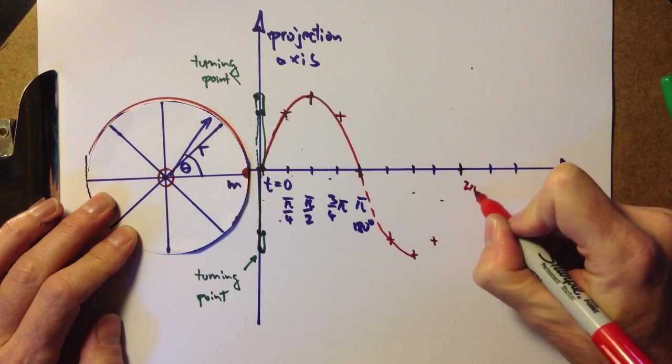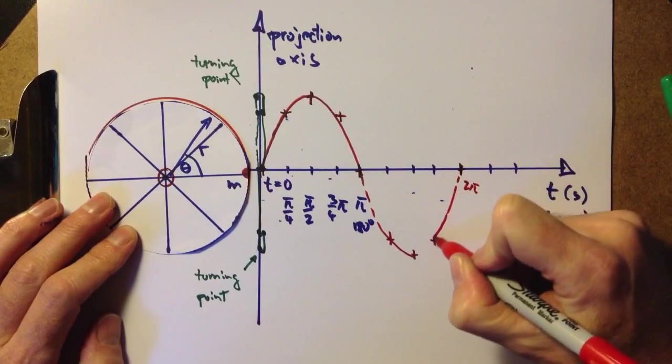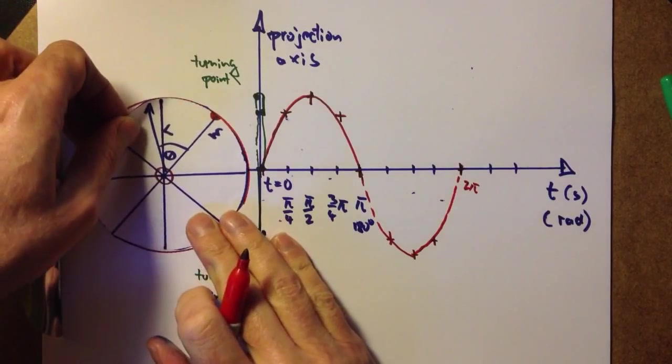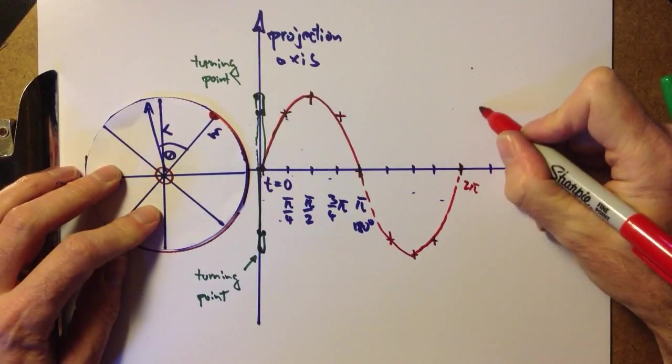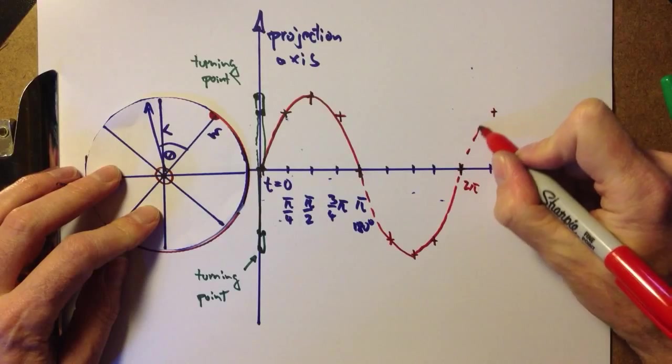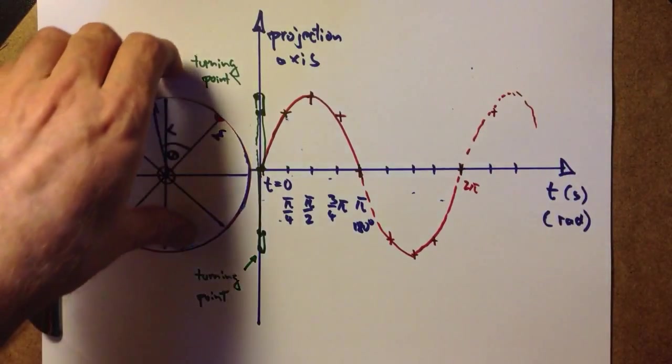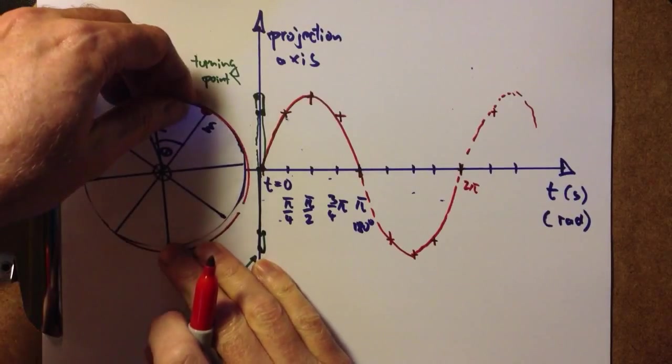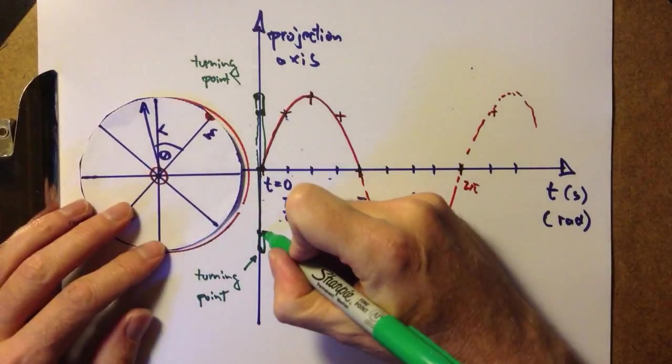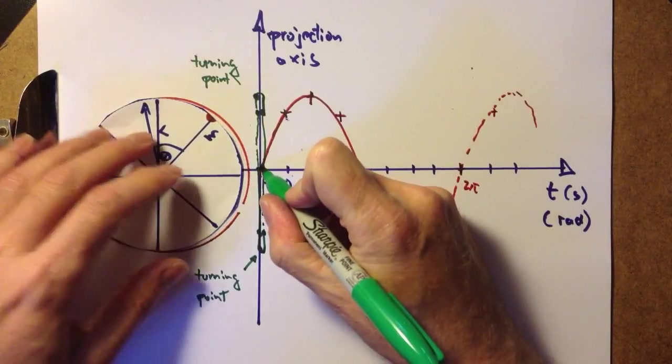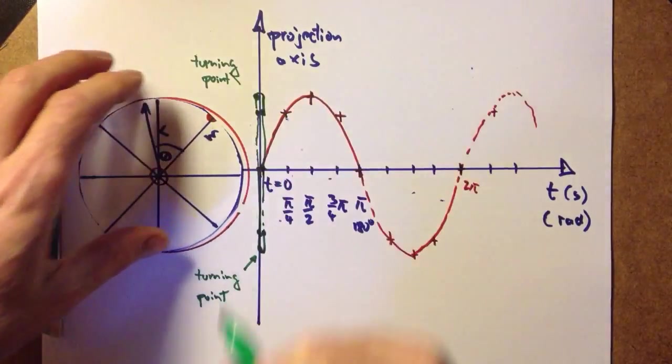So this would be the 2π. We are here. And we can keep going. So another 45 degrees, we are up here. And you can see that we're repeating the motion we just proceeded through. And equivalently, we go down here to zero and then move up again there.